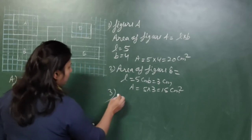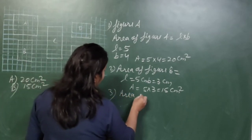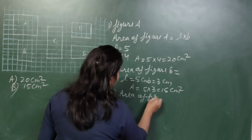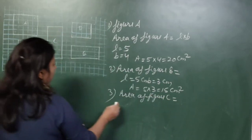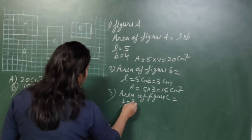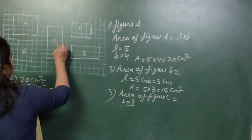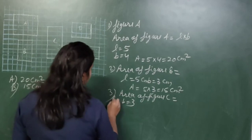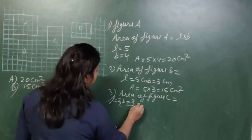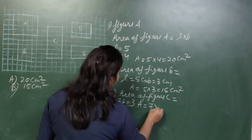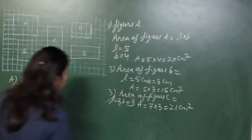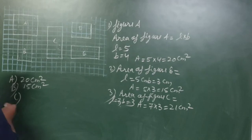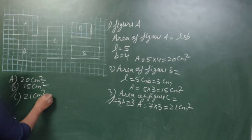Area of figure C: breadth is 3, and counting the length gives 7. So area equals 7 × 3 = 21 centimetres square. The area of figure C is 21 centimetres square.